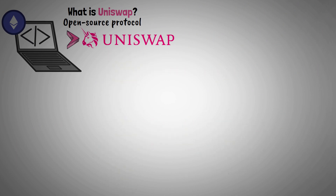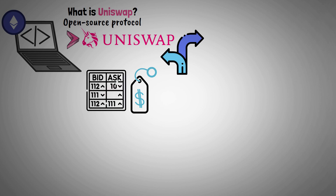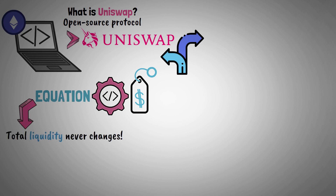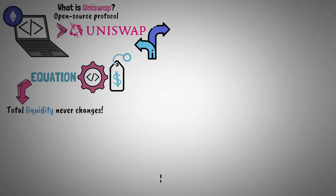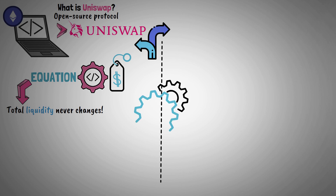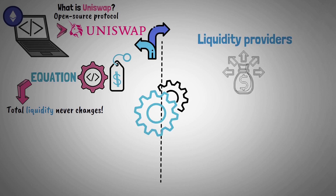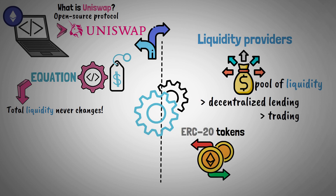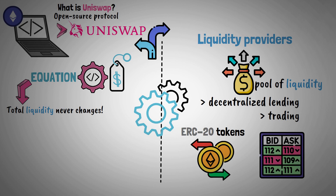Nevertheless, Uniswap differs from the others in that it sets prices without using an order book. Rather, the protocol operates according to an equation in which the pool's total liquidity never changes. For the model to function, liquidity providers must build a pool of liquidity to support decentralized lending and trading. ERC-20 tokens can be listed and swapped without the need for an order book.